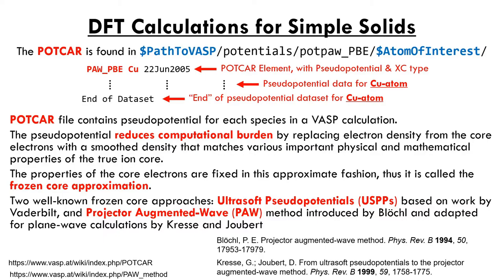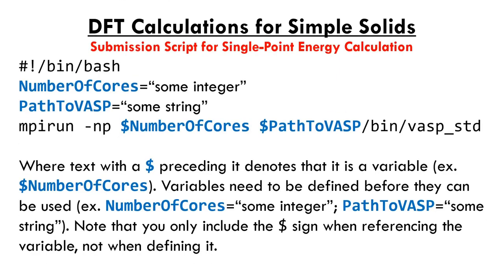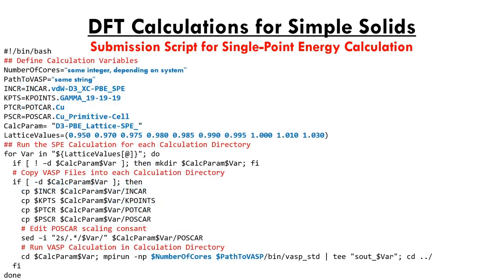Once all your VASP files are together, you're almost ready to submit a DFT calculation. All that remains is to construct a submission file. The only requirement is a way to tell your computer how to open and execute the VASP program. A simple BASH script begins with a command indicating you're using BASH, then defines variables for the number of CPU cores and the path to VASP, and finally uses OpenMPI to execute VASP in parallel on the requested cores. However, adding a few more commands to the script can save a lot of headache.